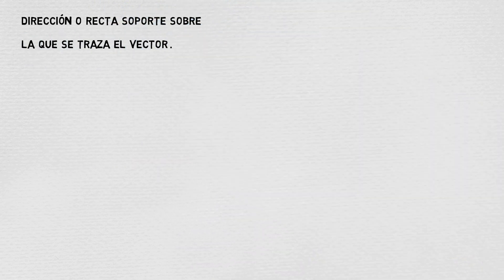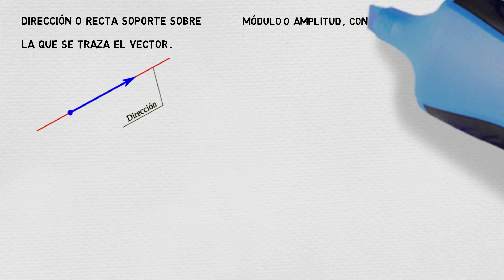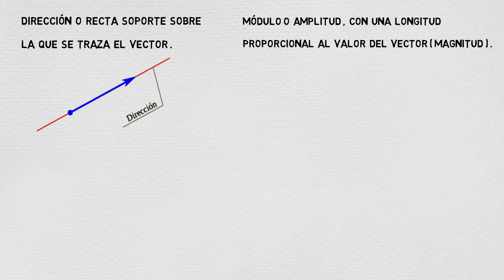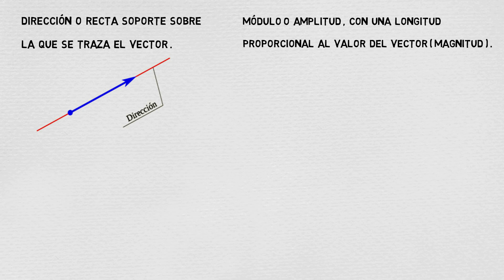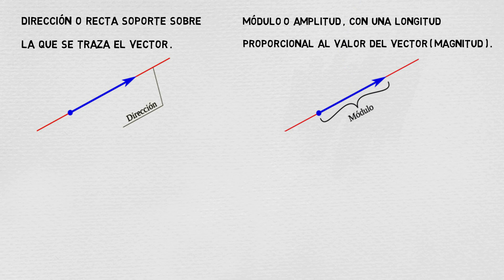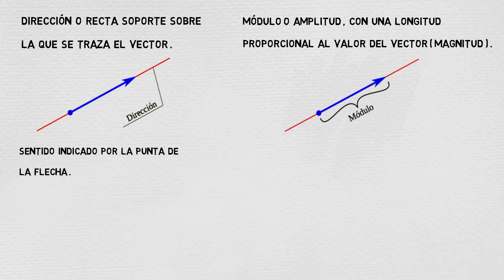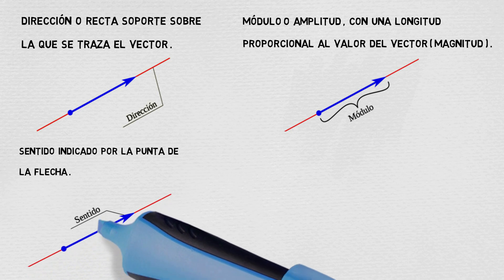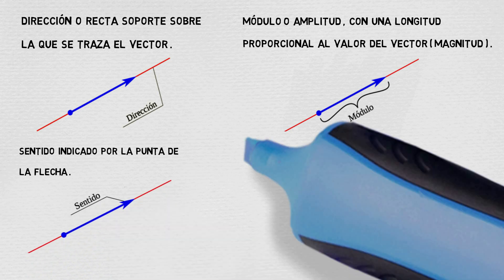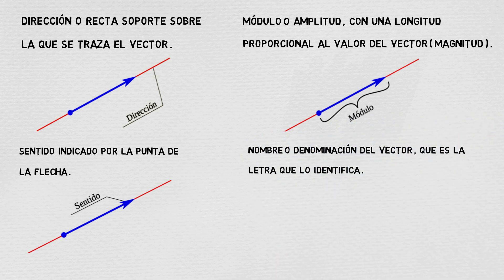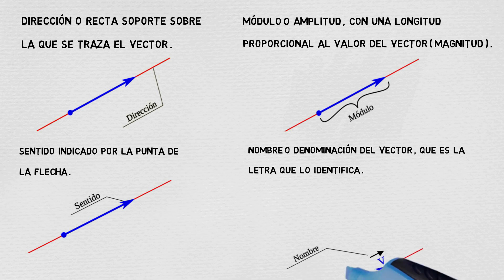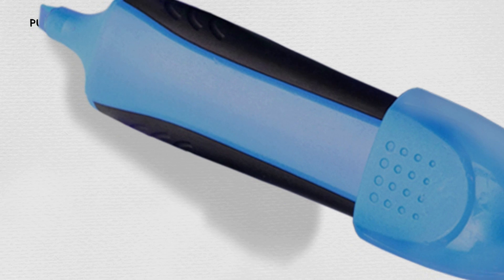The characteristics of a vector are: First, direction or path — the line on which the vector is drawn, shown graphically. Second, an angle or amplitude. Third, a magnitude proportional to the value of the vector, shown graphically. Fourth, the sense indicated by the tip of the arrow, shown graphically. Fifth, the name or denomination of the vector — the letter that identifies it, shown graphically.